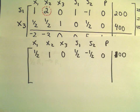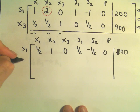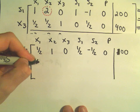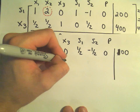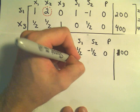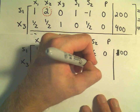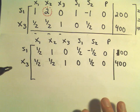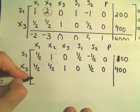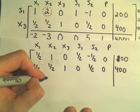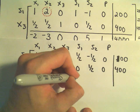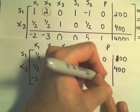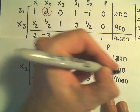I'm going to leave everything else alone and just recopy it. So we've got one-half, one-half, 1, 0, one-half, 0, 400. And the third row: negative 2, negative 3, 0, 0, 5, 1, and 4,000.